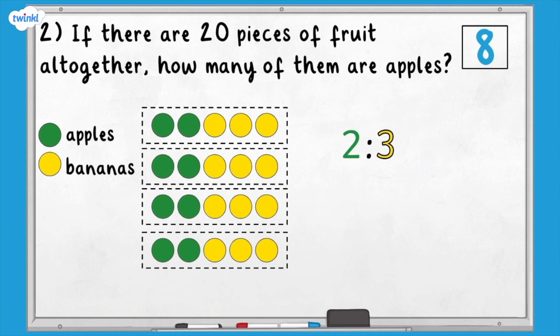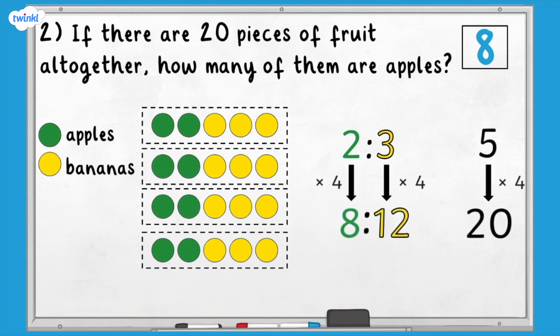This is how it would look without using the counters. We know that the total was four times greater, so we also need to multiply the numbers in the ratio by four.